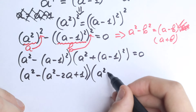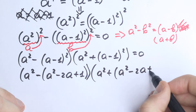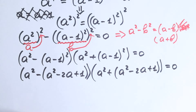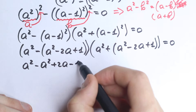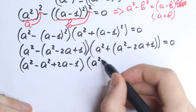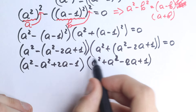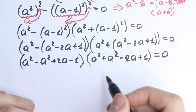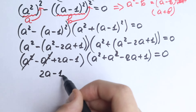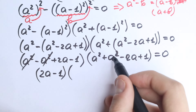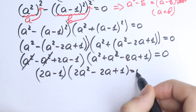The second parenthesis is a-squared plus a-minus-one-squared, which expands using the same identity to a-squared plus a-squared minus two-a plus one. Now opening the parentheses: the first gives a-squared minus a-squared plus two-a minus one, and the second gives a-squared plus a-squared minus two-a plus one. The a-squared terms cancel in the first factor, and we get the product equal to two-a minus one times two-a-squared minus two-a plus one equal to zero.